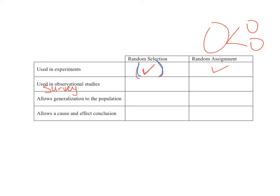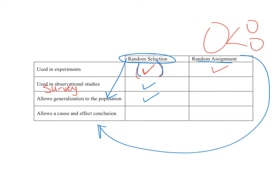If you're just given a group of people, you must at least randomly assign them if you're going to do an experiment. Observational studies should have random selection so you can generalize to the population — you don't need random assignment because random assignment only belongs in experiments. Random selection is the only thing that allows you to generalize to the population, and random assignment is the only thing that allows you to conclude cause and effect.